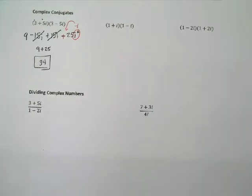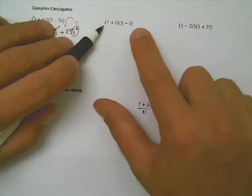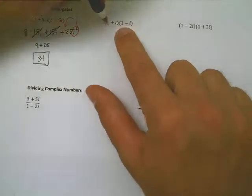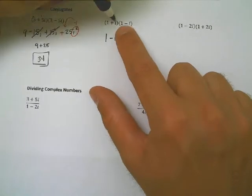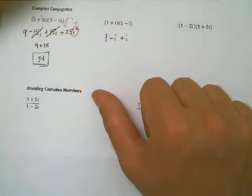1 plus i and 1 minus i. Let's FOIL it out. 1 times 1 is 1. Outer terms, minus i. Inner terms, plus i. Last terms, minus i squared.